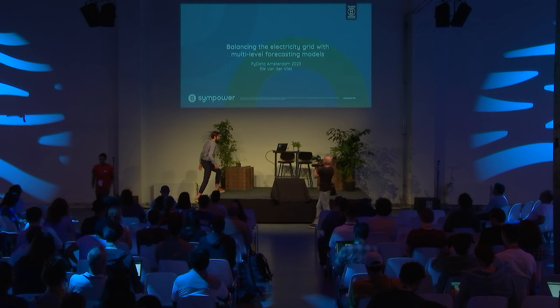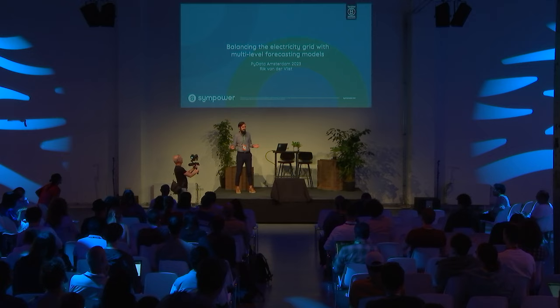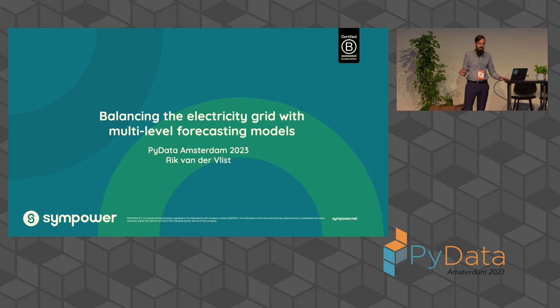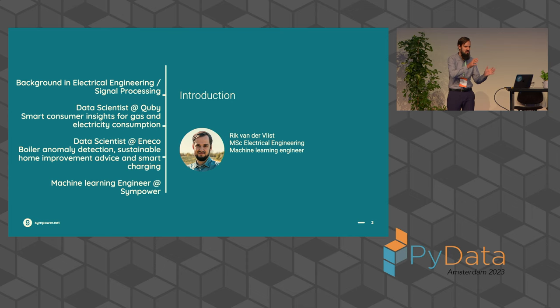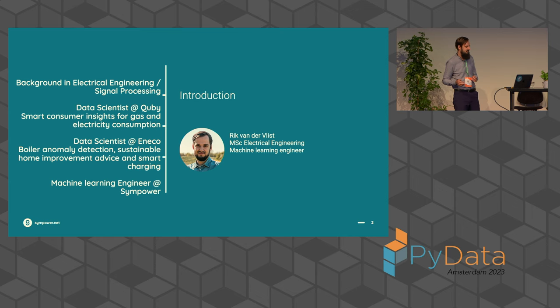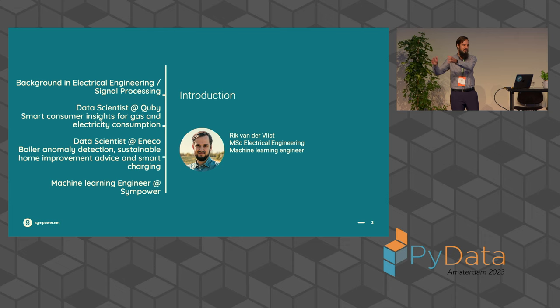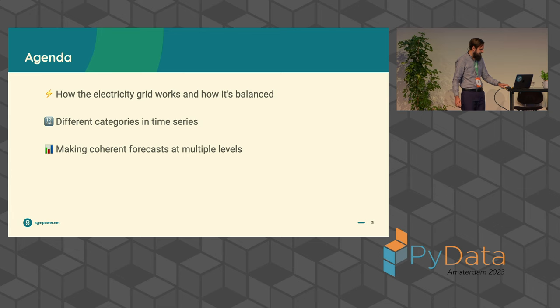Today we're going to listen to Rick Van Der Flist, who is going to talk about balancing the electricity grid with multi-level forecasting models. Please, let's give a warm welcome to Rick. Thank you, welcome everybody, thanks for coming along. Today we're going to talk about the electricity grid and what we do at SimPower. I have a background in electrical engineering, then slowly shifted towards signal processing, then did some data science with energy disaggregation and sustainability advice, and I'm a machine learning engineer at SimPower. It's kind of like full circle, coming from an electrical background into data science, but still being connected to electricity.